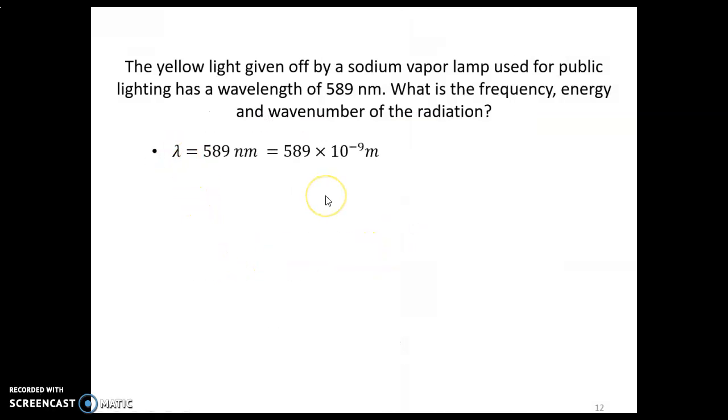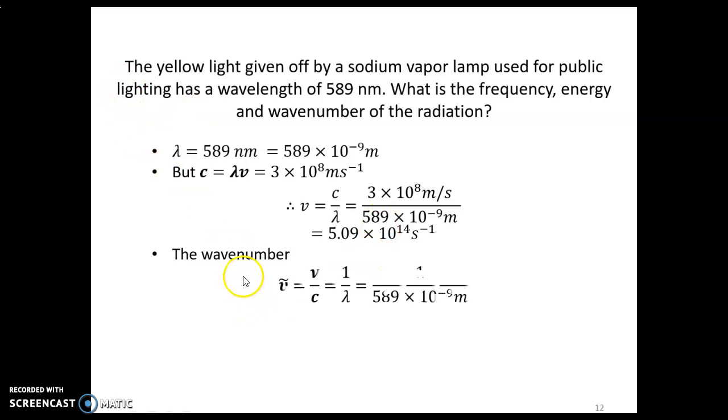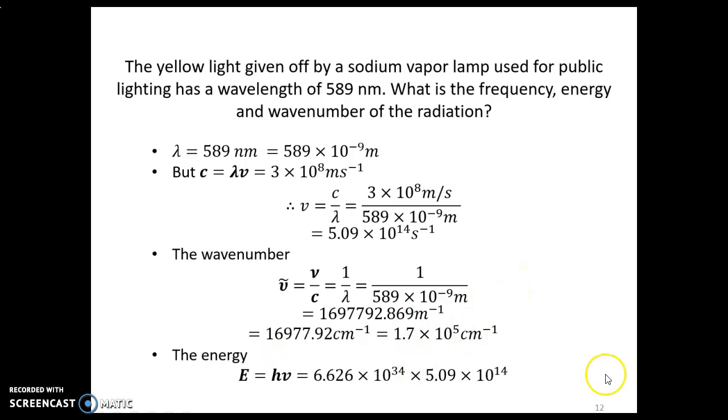So we have the wavelength given. And we know that there's a relationship between wavelength and speed and frequency. So simply we calculate the frequency. The wave number can also be calculated, the reciprocal of the wavelength. The energy, and any of the formulas can be used to calculate the energy, given as that.